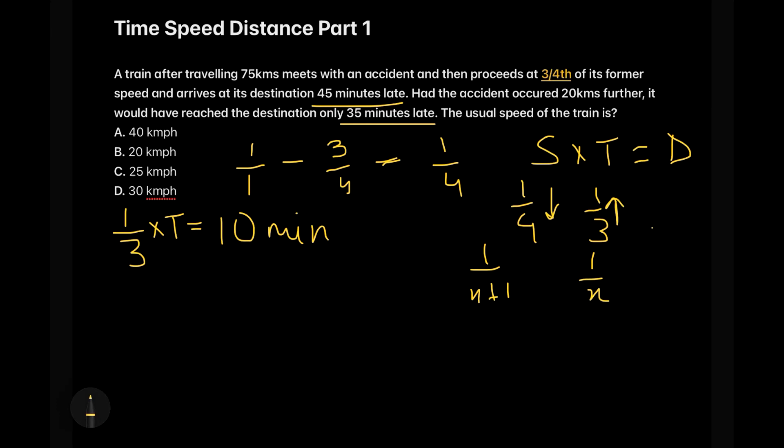So one third of the total time is equals to 10 minutes. So the total time will be equals to 30 minutes, quite obvious. And because this question is entirely in terms of kilometers, we will try to convert the minutes into hours which will give me 0.5 hours.